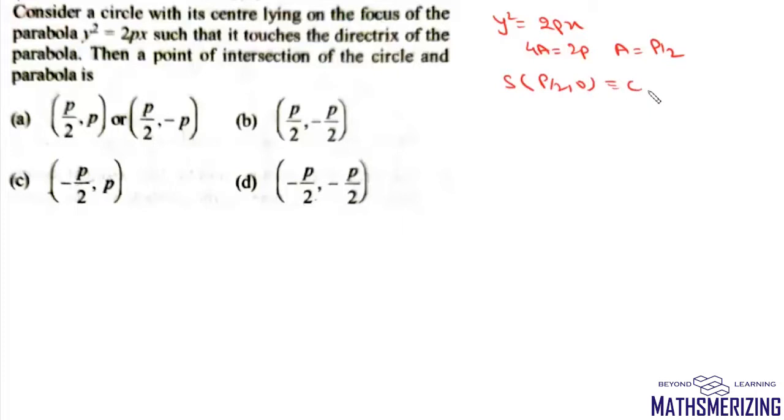It touches the directrix of the parabola. We know that the distance of focus from the base of the directrix is simply 2a, which in this case is simply p.